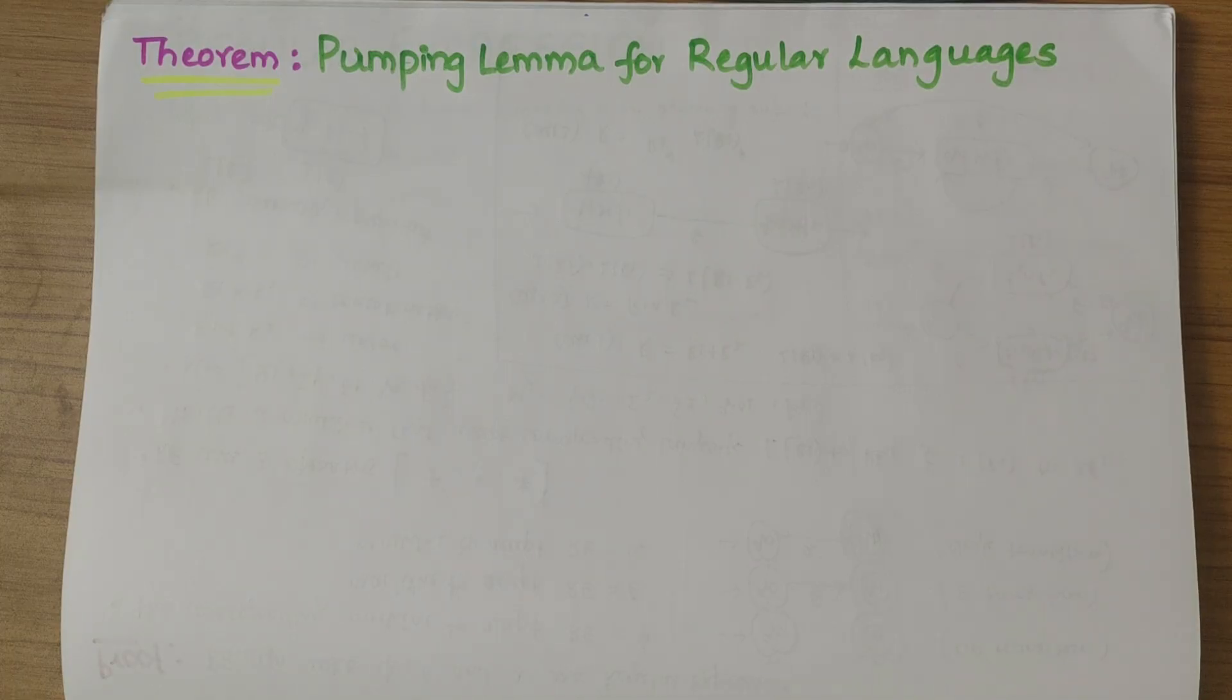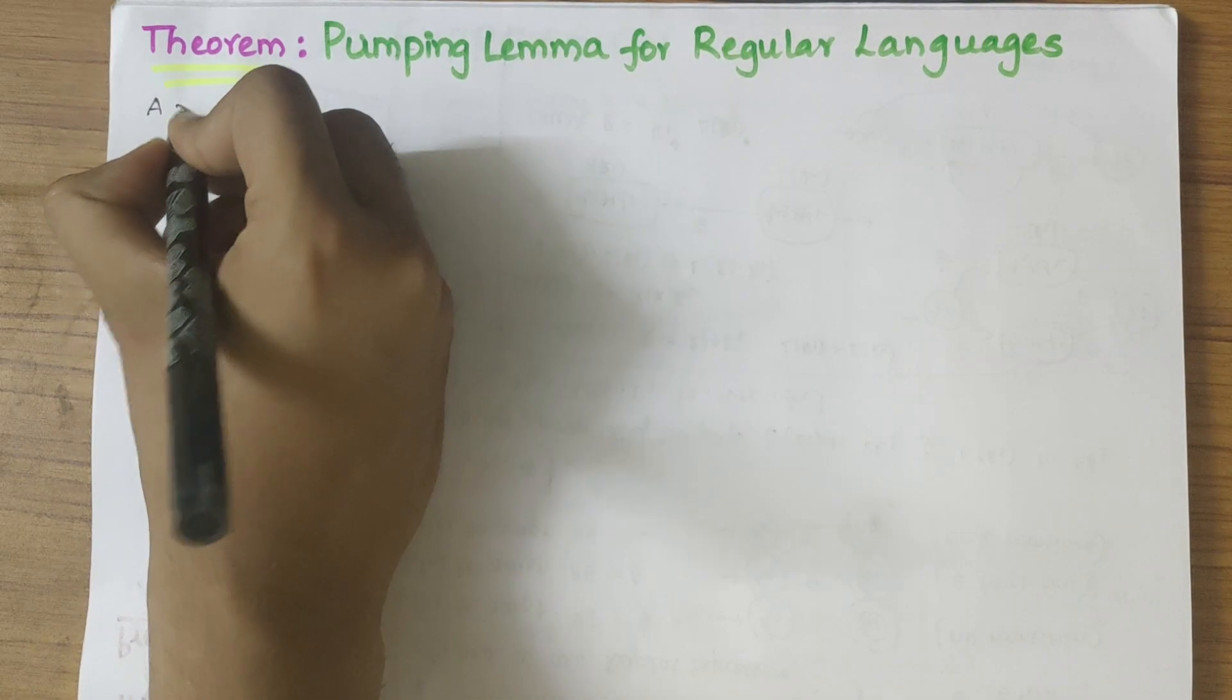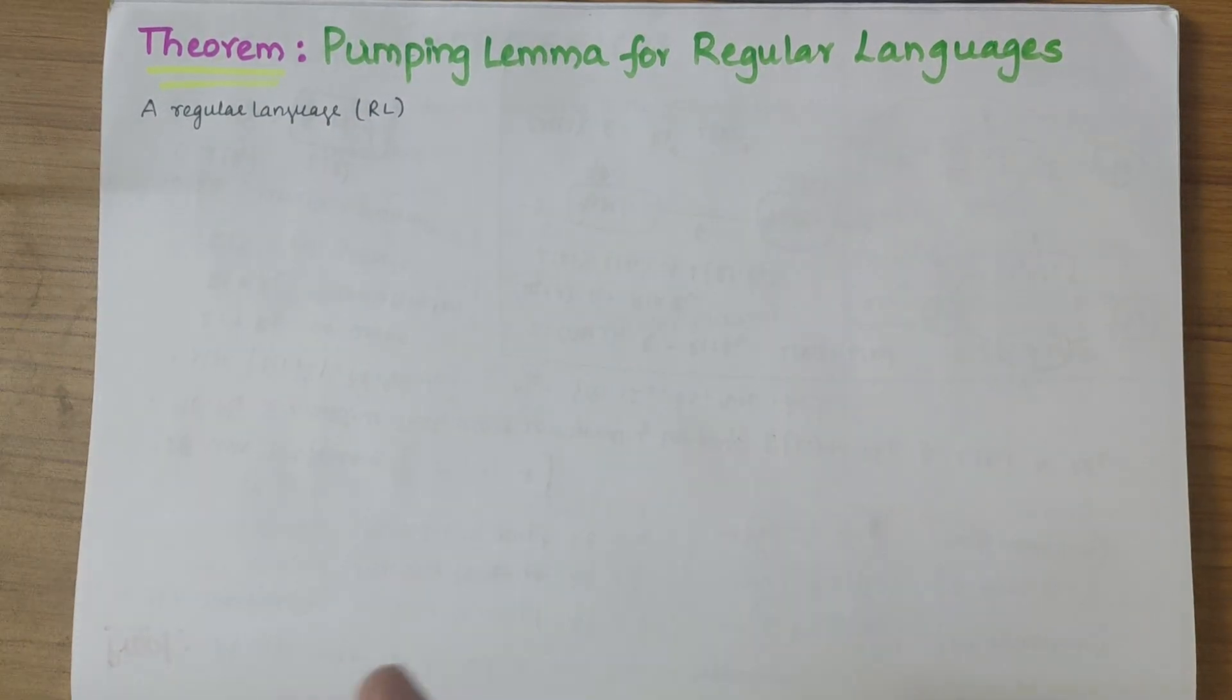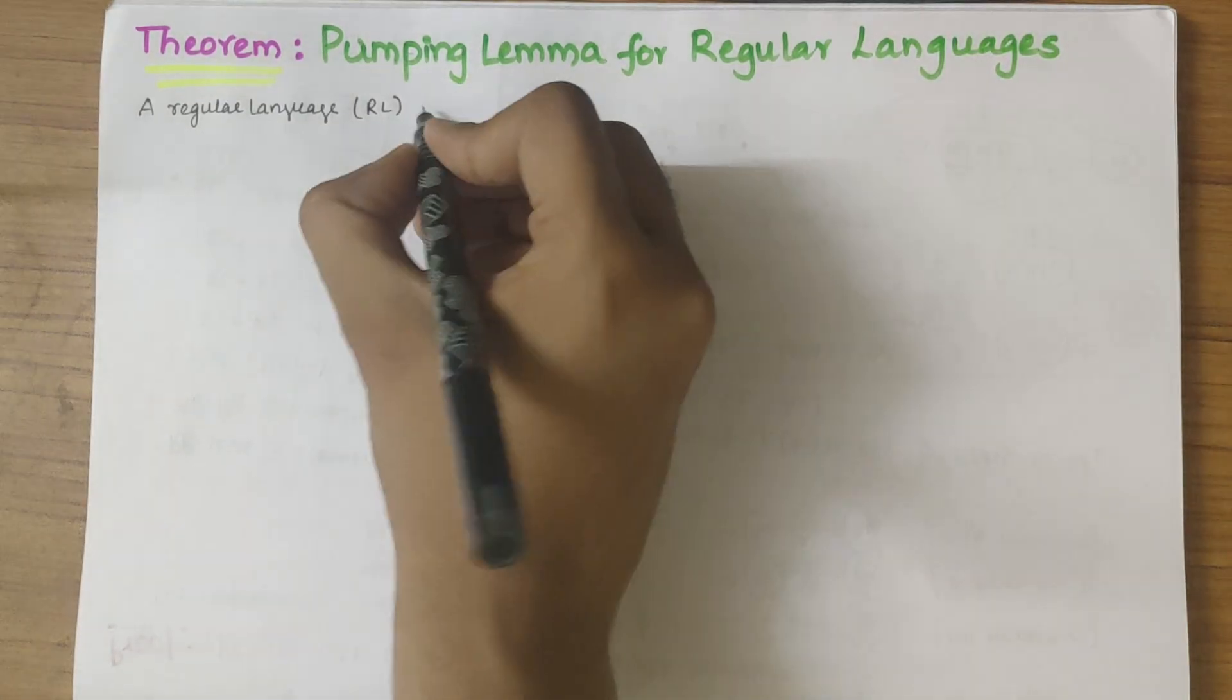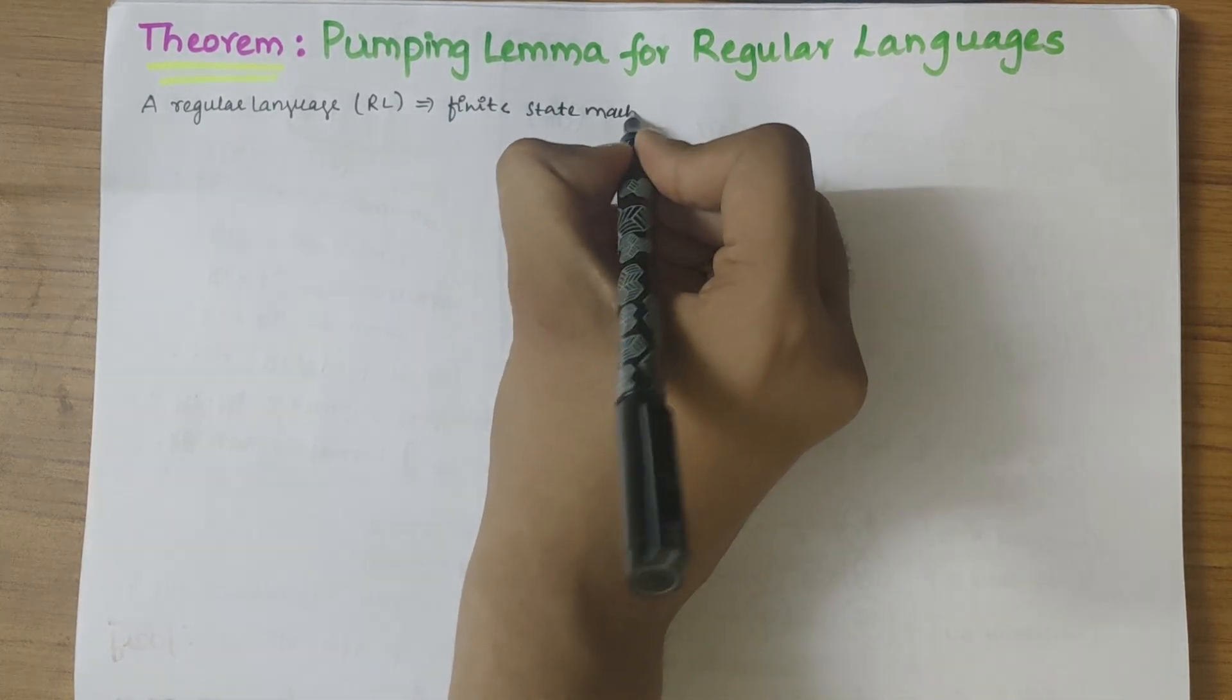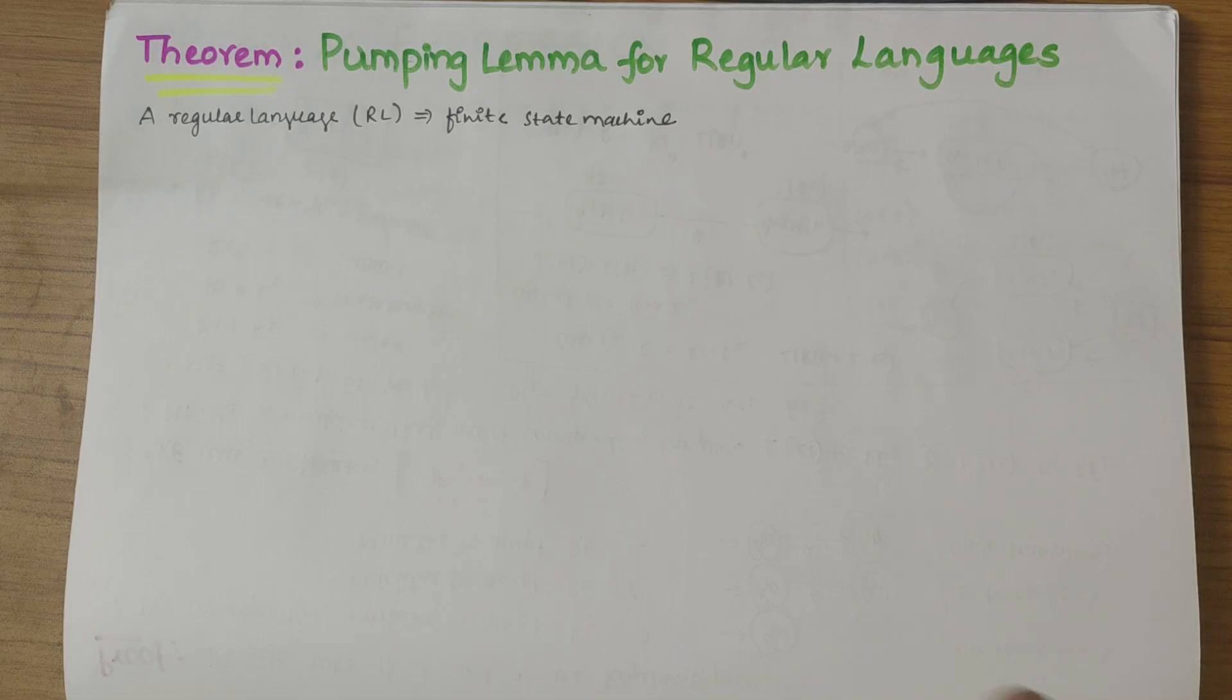In this video we'll be looking into the second theorem, that is pumping lemma for regular languages. So a regular language RL is accepted by finite state machine. That is, for any regular language we can construct a finite state machine, but for a non-regular language it is impossible to have an equivalent finite state machine which accepts only one regular language.